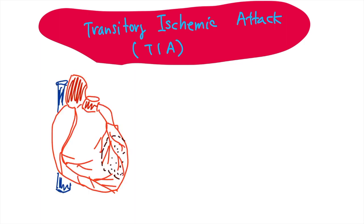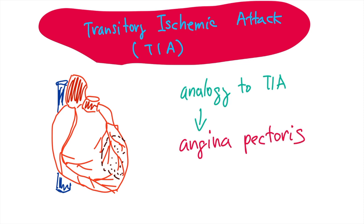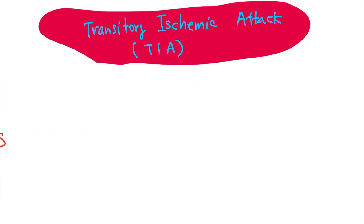As an analogy of transitory ischemic attack we could take angina pectoris, but in case of angina pectoris the main clinical sign is pain. In contrast to this, in transitory ischemic attack the main clinical presentation is a focal neurological deficit.